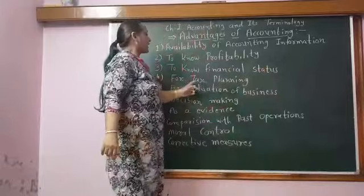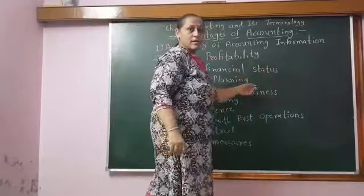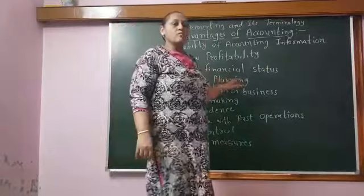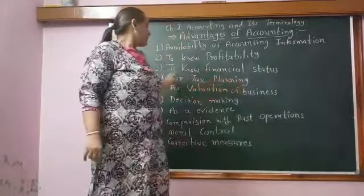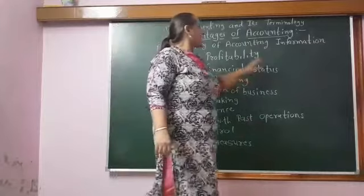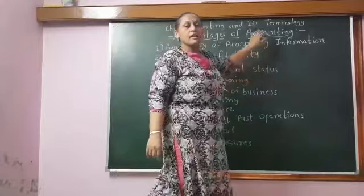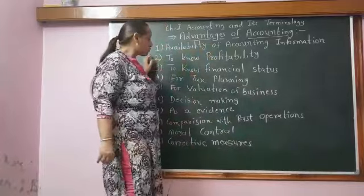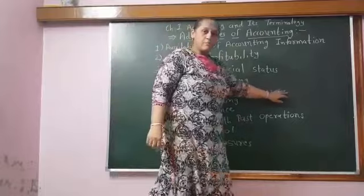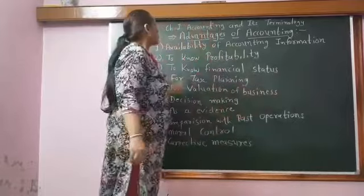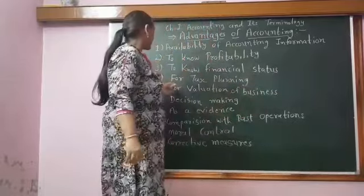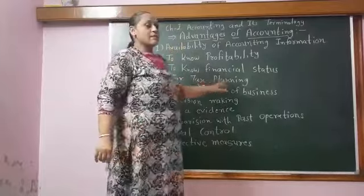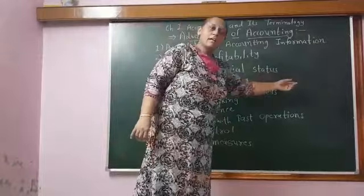The next advantage is for tax planning. As we know, from the income of the business, we are supposed to pay tax. So, for tax purposes, we have to write the books of account. From the transactions, we can come to know how much tax we are supposed to pay and we can make planning for that. This fourth advantage is to know the tax liability and make planning for it.